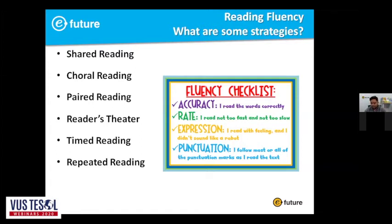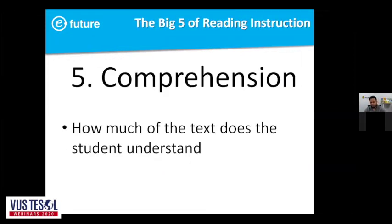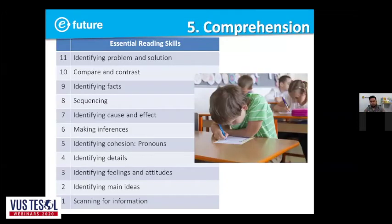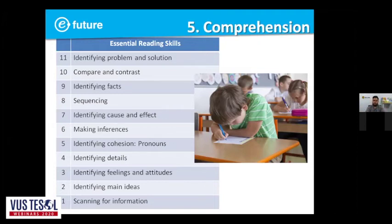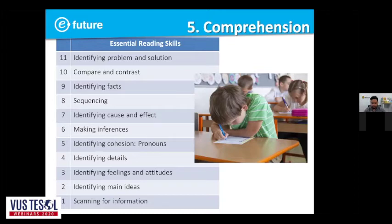Then we get into comprehension — how much does the student understand? This is where we get into essential reading skills, giving students tasks like identifying certain things in the text. Depending on the student's level and grade, you might not have them do anything too elaborate. Identifying a problem and solution is something most students can do depending on the story. So giving them these reading skills and tasks to test their comprehension, to see if they really understand the story. Number one at the bottom was scanning for information.